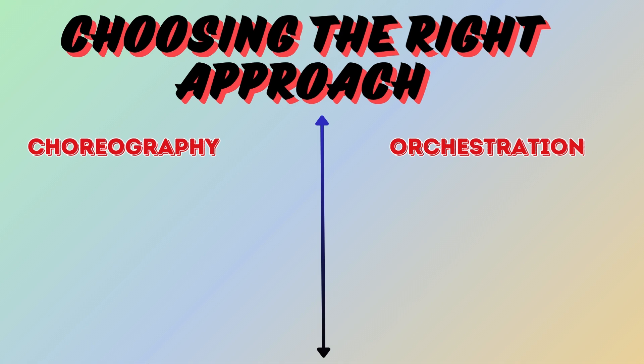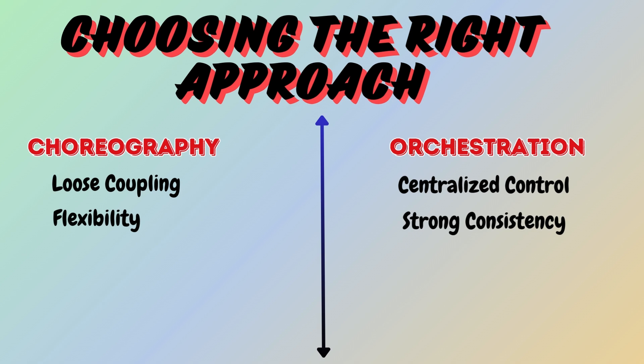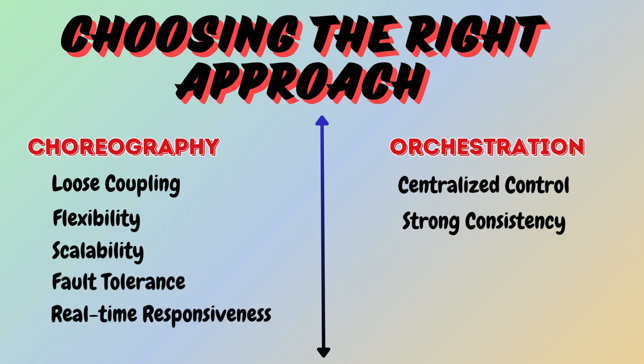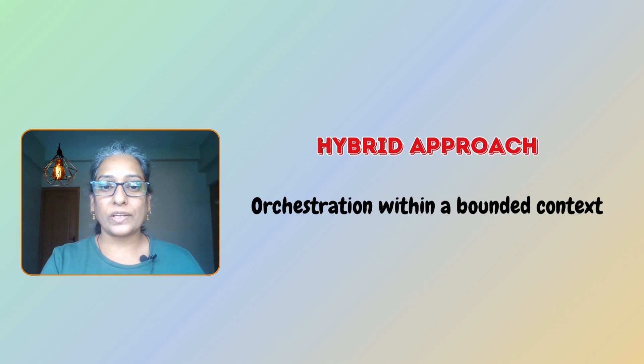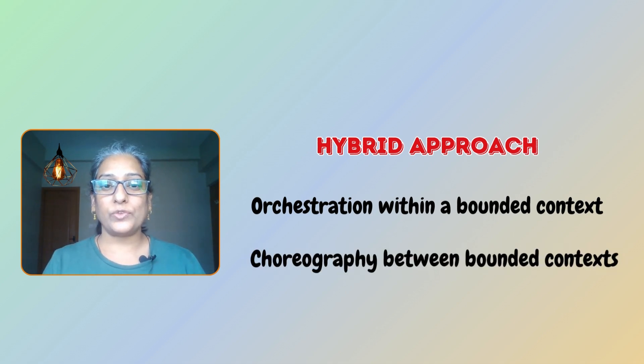So how do you choose between choreography and orchestration? Use choreography for loosely coupled interactions and flexibility. Opt for orchestration when you need centralized control and strong consistency. Consider your system's requirements — scalability, fault tolerance, and the need for real-time responsiveness. If these factors are paramount, choose choreography; otherwise, opt for orchestration. Sometimes a hybrid approach works best: orchestration within a bounded context and choreography between bounded contexts.